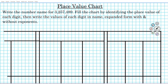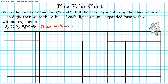So let's go ahead and write down this number as a number name first. The number name for 3,257,489 is 3 million — that's the only digit in the millions place — and then we go into the thousands place: 257,000. So that's all we have in the thousands place.